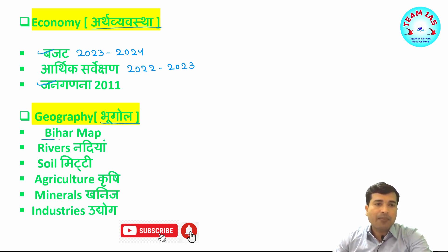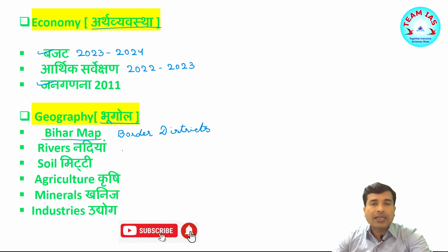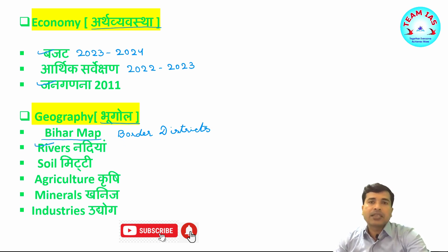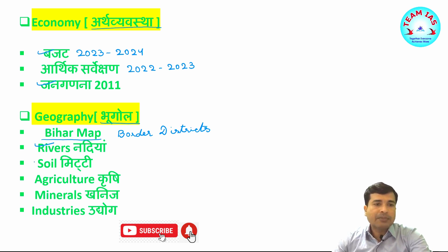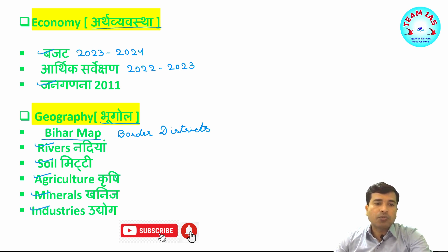Bhugol ki baat karein toh Bihar ka map ko zaroor ek baar dekh jaiyega, aur ismein jo bordering districts hain — border districts jo hain, khas karke jo adjoining districts with Nepal, UP, Jharkhand and West Bengal — usko acche se dekh jaiyega. Bihar ki nadiyan isko ek baar check kar lijiyega — Uttar Bihar ki nadiyan, Dakshin Bihar ki nadiyan — kaafi baar ye sawaal puchha hai aur ye easy hai isko answer karna. Phir Bihar ki mitti dekh jaiyega, bahut hi chhota portion hai, bahut kam points hain. Phir Bihar ka krishi — bahut kam points ismein bhi hain, jo updated data hai isko please check kariyega. Bihar ka khanij — yeh static portion hai, isko ek baar dekh jaiyega. Udyog bhi jo hai lagbhag static portion hai, isko ek baar scan through kar jaiyega.